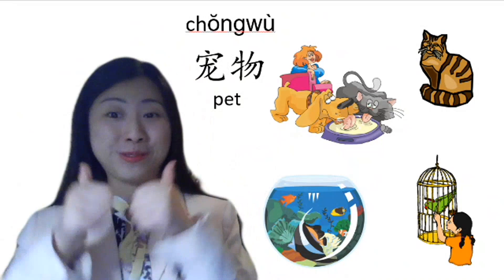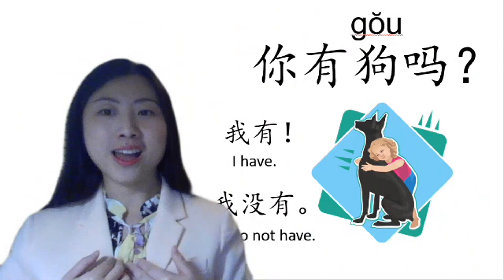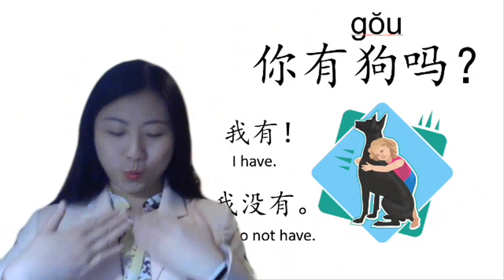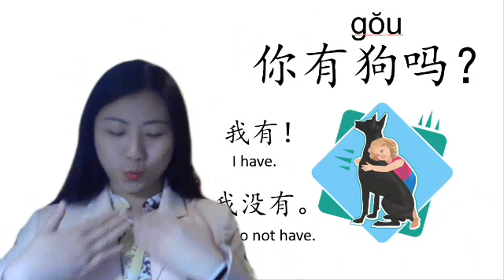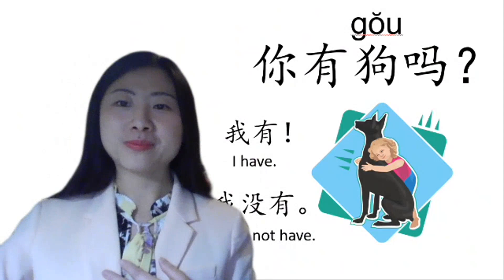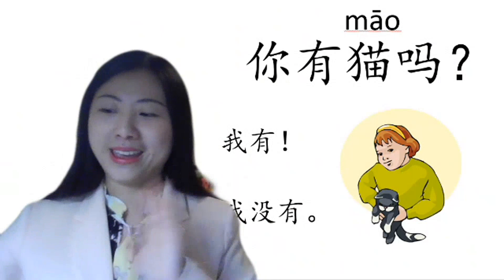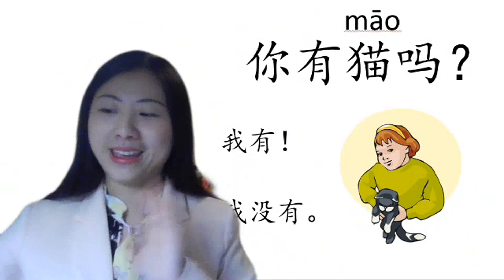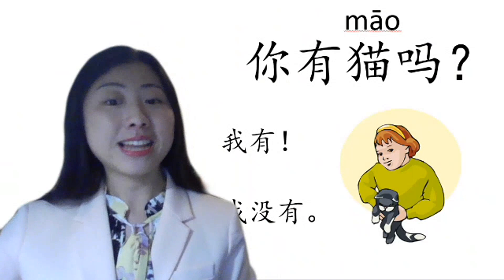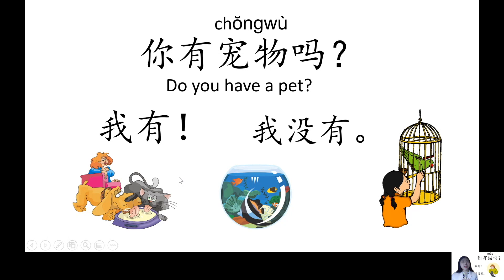你有狗吗？— Do you have a dog? 我有 — I have. 我没有 — I don't have. 你有猫吗？— Do you have a cat? 我有，我没有. 你有宠物吗？— Do you have a pet? 我有，我没有.